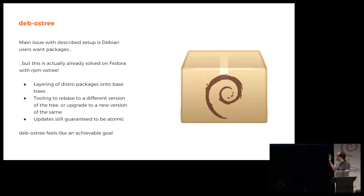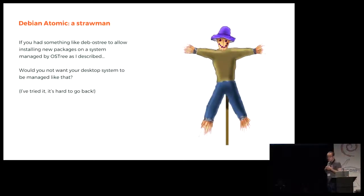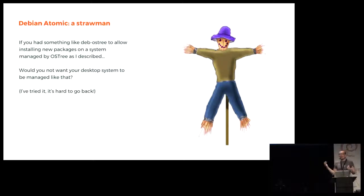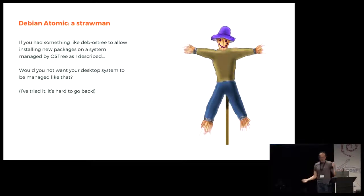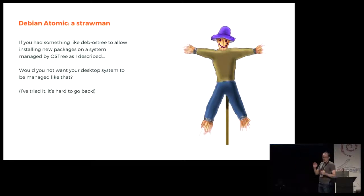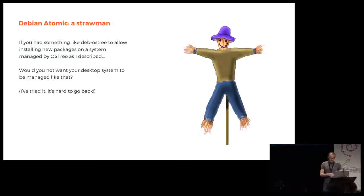I think with this — if I had something where the system is managed by OSTree and I have something like deb-OSTree to allow installing new packages on top when I need it — I would want my desktop system to be managed like that. I'm running Fedora on this because I needed virtual machines and we don't have a virtual machine app on Endless. But when I used to run Endless on it, it was amazing because I didn't need to care about anything. The OS always gets updated, it's tested, many people use exactly the same thing I'm using.